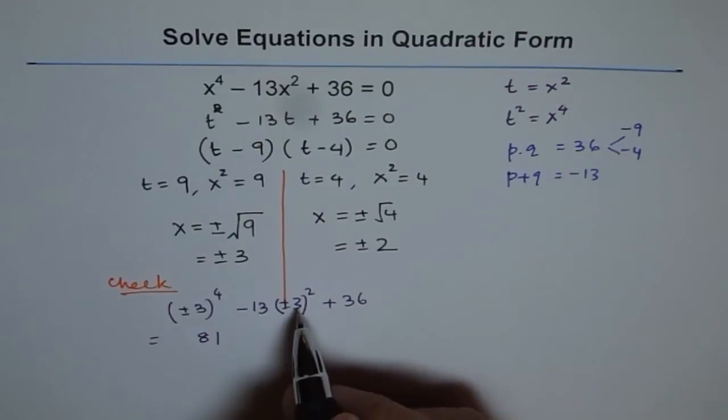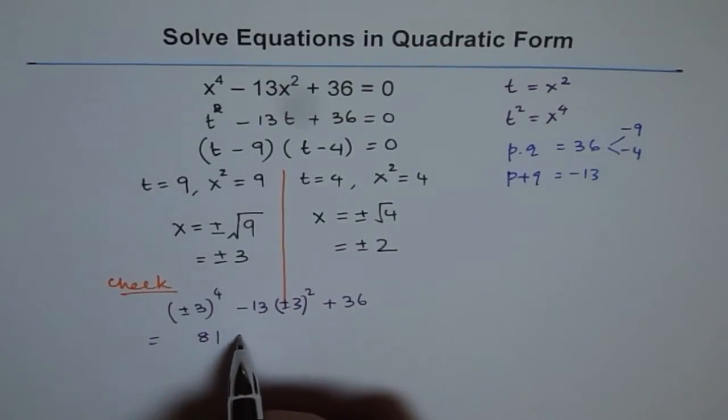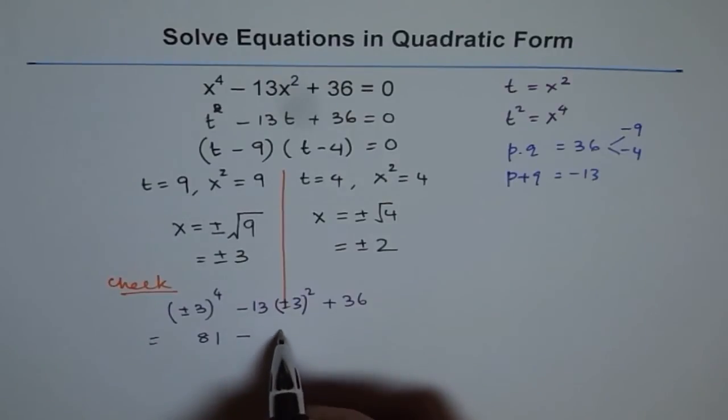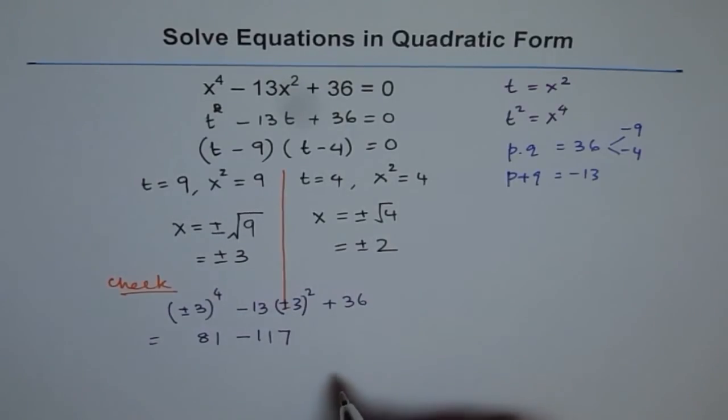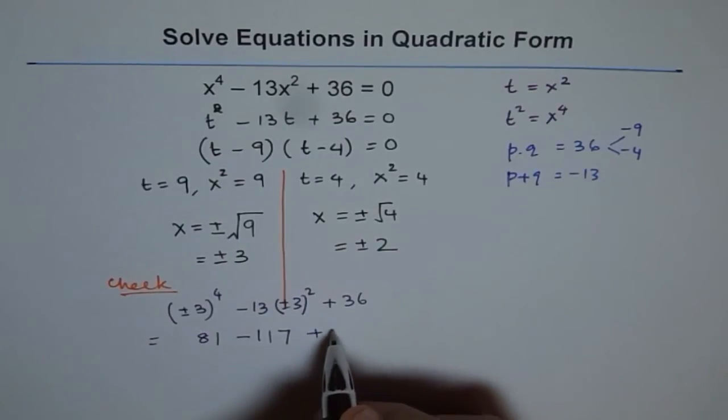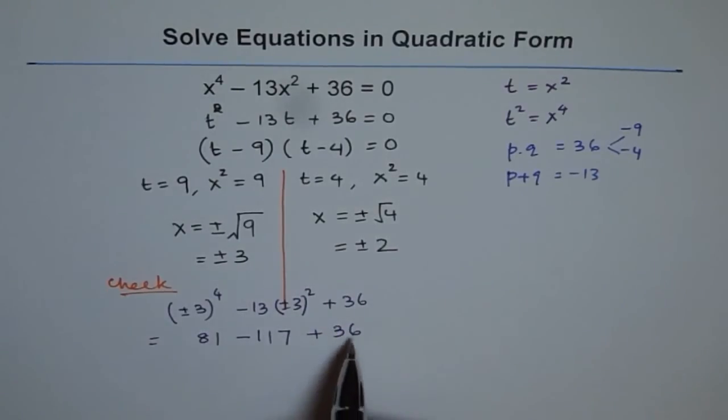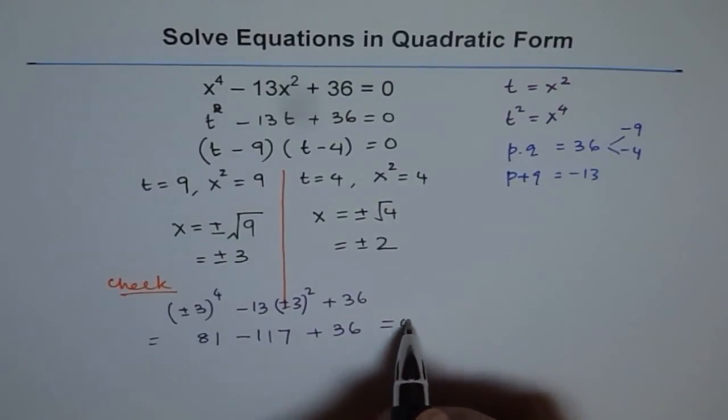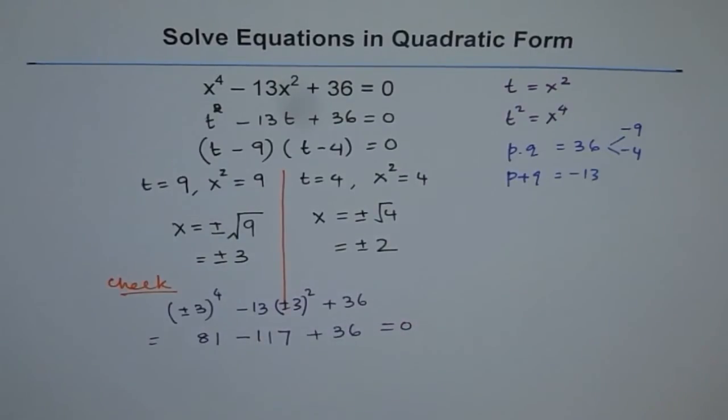And 3 times 3 is 9, 9 times 13 with a negative sign. 9 times 3 is 27. 9 times 1 is 9 plus 2 is 11, so minus 117 plus 36. So if we do this we do get 0. Perfect. So it works for us. Similarly we can try plus and minus 2.